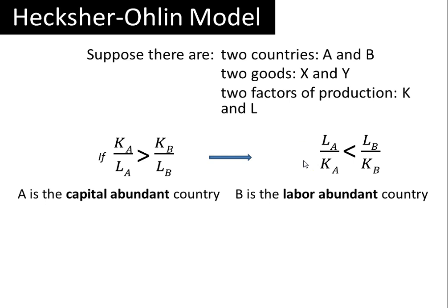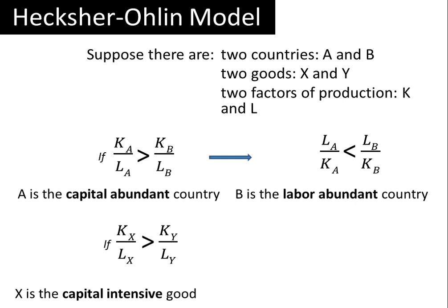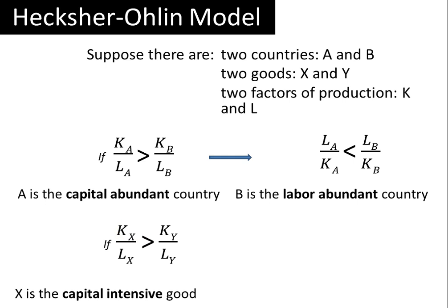Now let's take goods X and Y. If the inequality K_X/L_X > K_Y/L_Y is true, then we say that X is the relatively capital-intensive good. K subscript X stands for the amount of capital used in the production of one unit of good X, and L subscript X stands for the amount of labor used in the production of one unit of X. If there is more capital used per worker in the production of X than in the production of Y, then X is the more capital-intensive good. We are comparing capital relative to labor, not just total capital used.